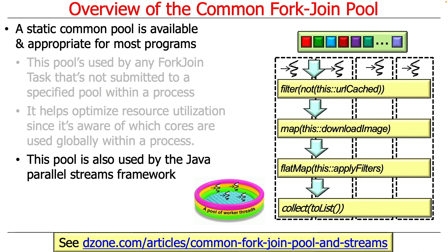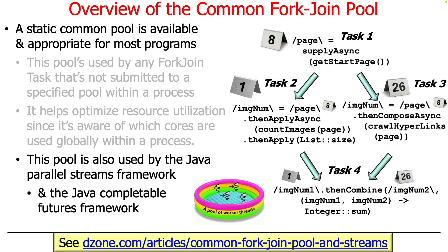This pool is also used by the Java parallel streams framework — that's what you get out of the box with parallel streams. There are ways of circumventing this, but they're not very portable and are somewhat awkward to use. The Java CompletableFutures framework also defaults to using the Common Fork Join Pool, although you can override the pool used when you submit something via the supplyAsync method. We'll talk more about that when we cover the Common Fork Join Pool and CompletableFutures.